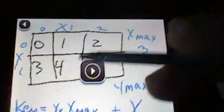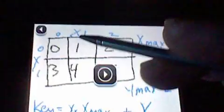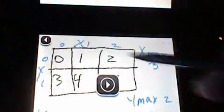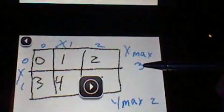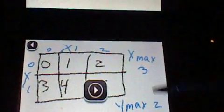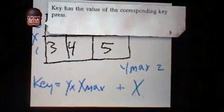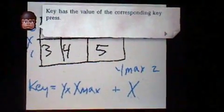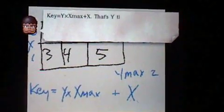This is basically a way to convert a two-dimensional array, which is x and y, into a single-dimensional array, which is 0 through 5. So in this case, x max is 3 and y max is 2. But in the previous example, x max is 6 and y max is 4.